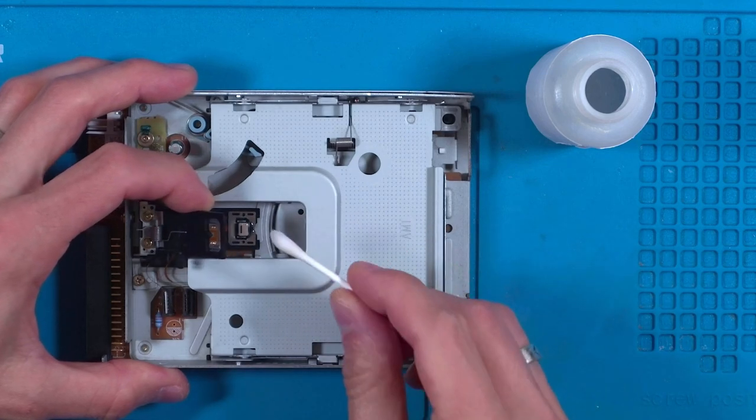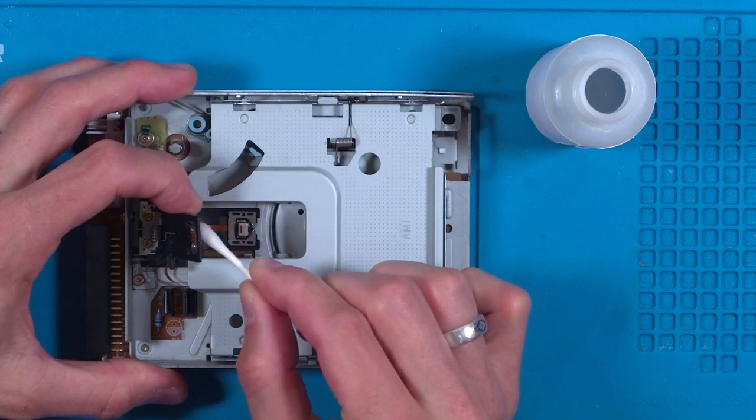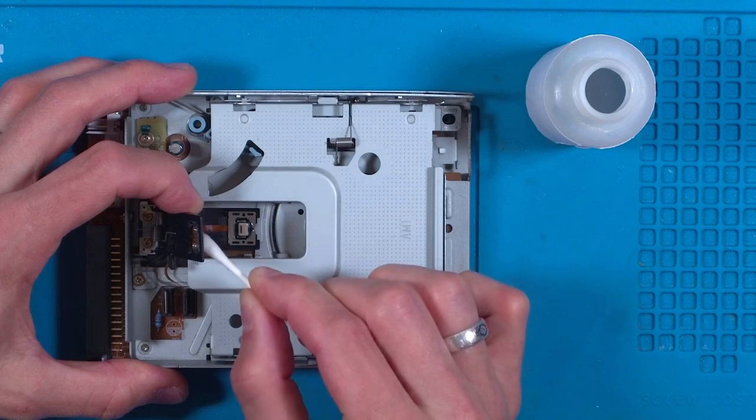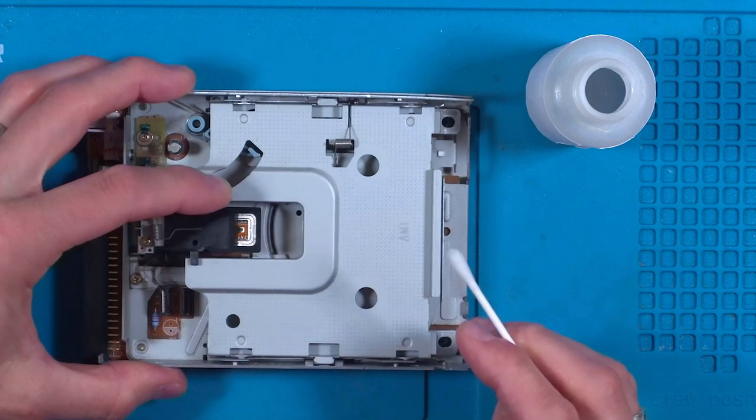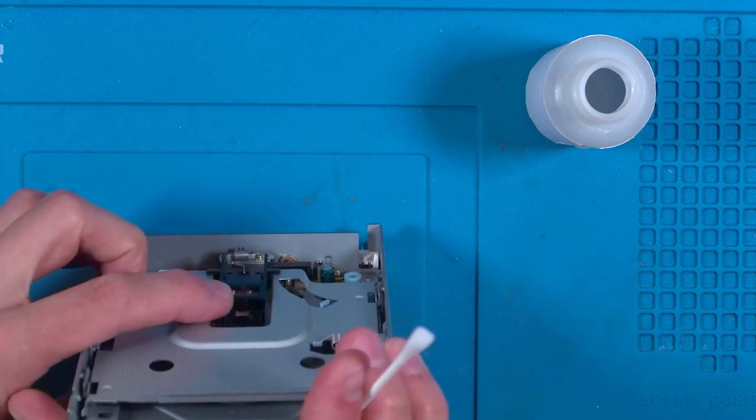It's also okay to gently lift the upper head up, touching the plastic part to get access to both. Once happy let it dry and then try a disc. If it still reads bad, repeat this process until you're happy with the results.